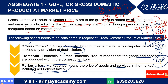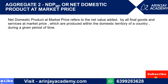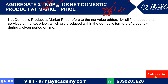This is aggregate one. If you understand the first aggregate well, all the remaining aggregates become very easy. Now let's move to the second aggregate — NDP at MP, or Net Domestic Product at Market Price. This comes directly from GDP. The only difference between GDP and NDP is that GDP has 'gross' while NDP has 'net' — domestic and market price remain the same.